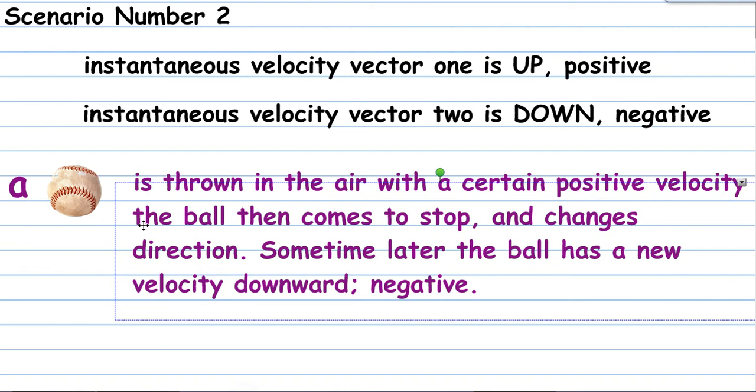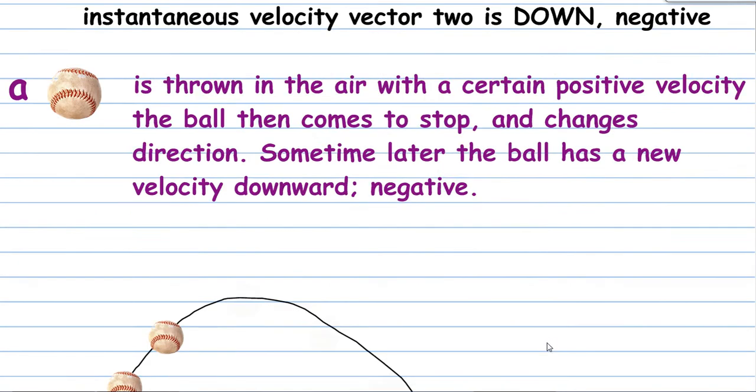Sometime later, and we'll give a delta t to this later, sometime later the ball will have a new velocity downward, and in this case it's negative. Of course we're dealing here with the acceleration due to gravity and the force of gravity, but specifically what happens is the ball is being affected by the gravitational force. So let's get started and see what this might look like.